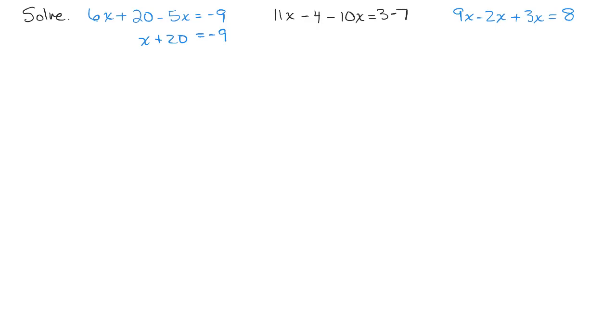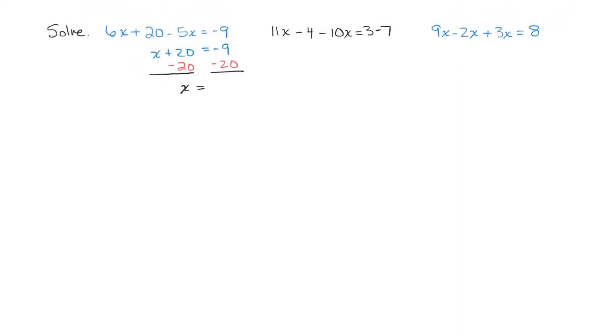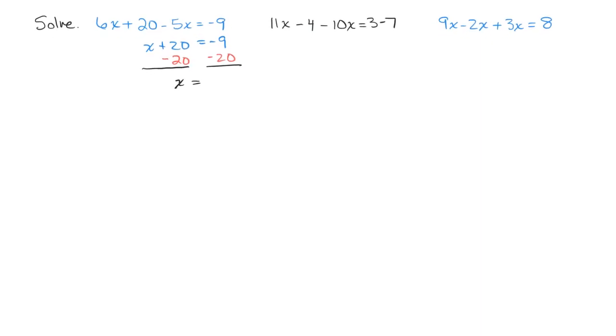And now I've simplified both sides as much as I can. So I'm going to subtract 20 from both sides of the equation in order to get x on the left-hand side by itself. So this will give me x plus 0 which is x. And then remember this means negative 9 plus negative 20. So that's going to be negative 29. And that should be our answer.